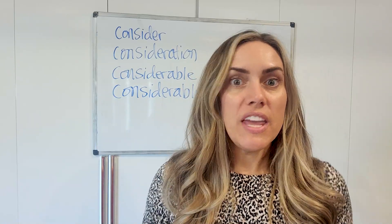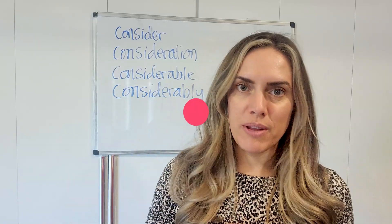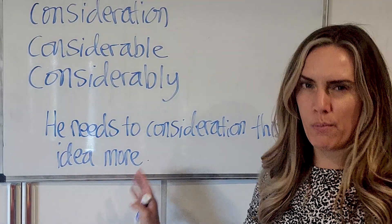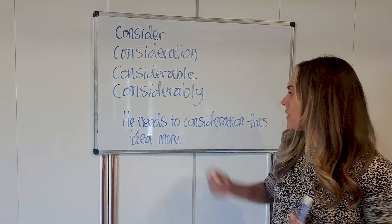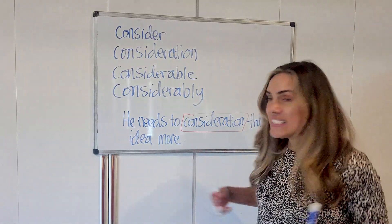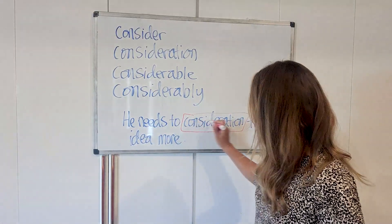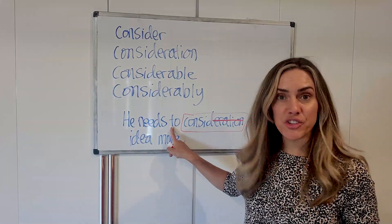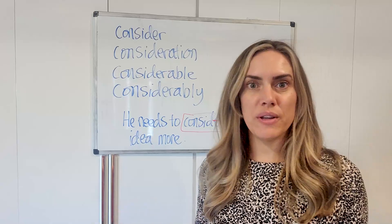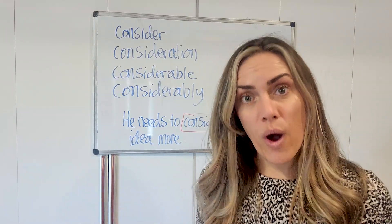Even when you know that, you might still put the word in the wrong place. Sometimes students will write a sentence and use a great academic vocabulary word, but in the wrong form. Like in this sentence: 'He needs to consideration this idea more.' The problem is that 'consideration' is a noun, but we need the base form of the verb 'consider' because it's coming after 'to' — 'needs to.' After 'to,' you use the base form of a verb. So how do we avoid making these errors?